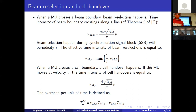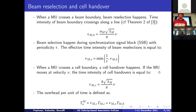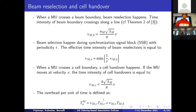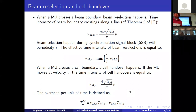When the mobile user crosses a cell boundary, a cell handover occurs — the user changes both the beam and the base station it connects to. A closed-form expression exists for the time intensity of cell handovers along a straight line. With these definitions we can define the overhead per unit of time, which captures the percentage of time the mobile user is not transmitting because it is reshuffling between beams or base stations. Each handover takes approximately 43 ms (T_HO) and each beam reselection takes approximately 23 ms for a 5G network.